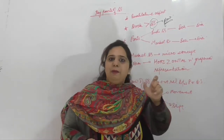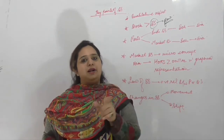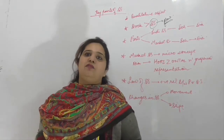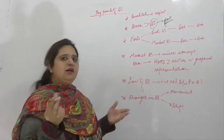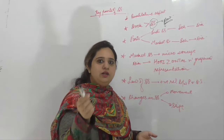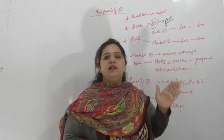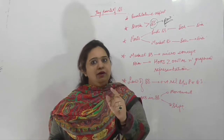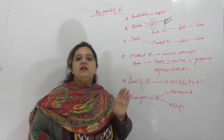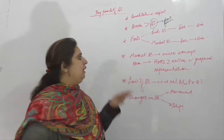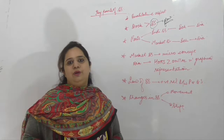Diagram के लिए क्या word use करोगे? Graphical representation — schedule का graphical representation। यह express करता है relations किसके बीच में? Quantity supplied at different levels of prices. अगर individual है तो by a single producing unit in our economy, और अगर market है तो by all the producing units in the economy।